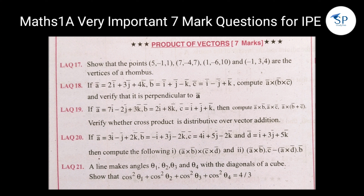If a = 7i − 2j + 3k, b = 2i + 8k, c = i + j + k, then compute a × (b × c) and verify it is perpendicular to a. Next question: if a = 7i − 2j + 3k, b = 2i + 8k, c = i + j + k, then compute a × b, a × c, and a × (b + c), and verify whether cross product is distributive over vector addition. Next model: a line makes angles θ₁, θ₂, θ₃, and θ₄ with the diagonals of a cube; show that cos²θ₁ + cos²θ₂ + cos²θ₃ + cos²θ₄ = 4/3. This is also one of the very important questions.